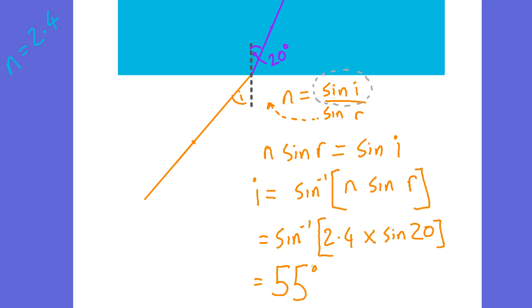If you're getting math errors, try breaking the calculation into smaller stages. If the value inside the inverse sine is greater than 1, you can't inverse sine it, so you've gone wrong somewhere. That tends to crop up more in total internal reflection. Getting i on its own is the easier of the two rearrangements.